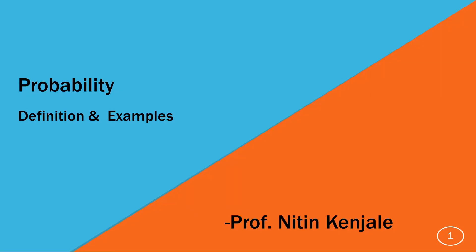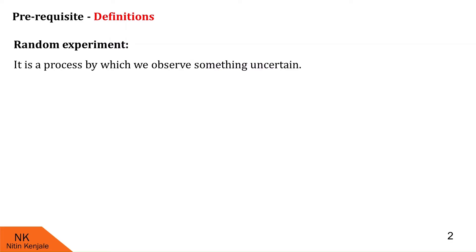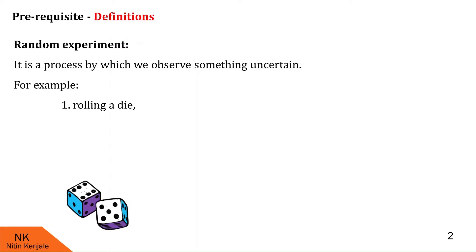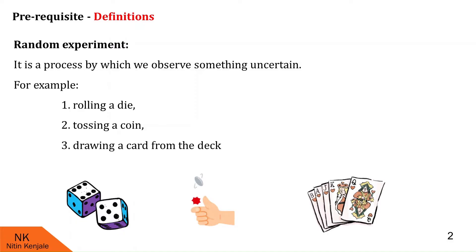First of all, we will see some prerequisite terminologies. The first in the list is random experiment. A random experiment is a process by which we observe something uncertain. It can also be seen as a process which turns into several outcomes. Some regularly used random experiments include rolling a die, tossing a coin, or drawing a card from the deck.